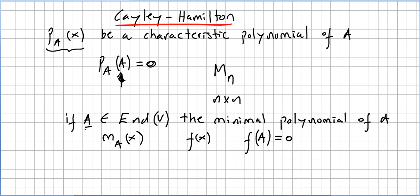If A is in the set of endomorphisms of a vector space V, the minimal polynomial of A, that I'm going to write m_A(x), is the smallest degree monic polynomial f(x) such that f(A) equals 0.